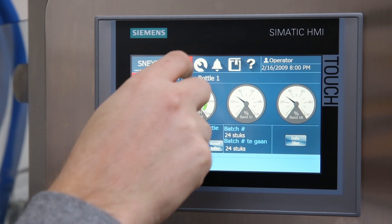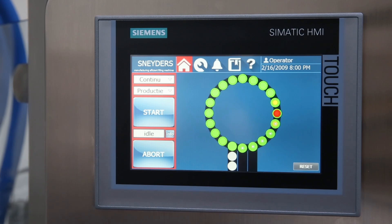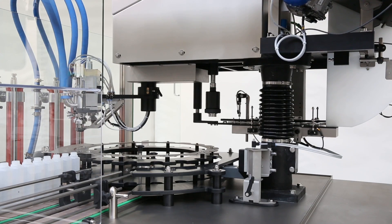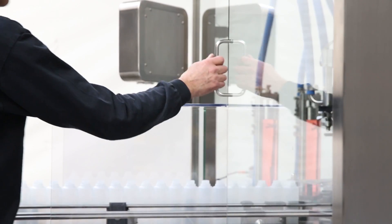An operator-friendly HMI guides the operator through the format changeover and CIP process. A bottle format changeover requires the change of one star wheel set only. It can be done easily while the machine can be accessed from most sides.